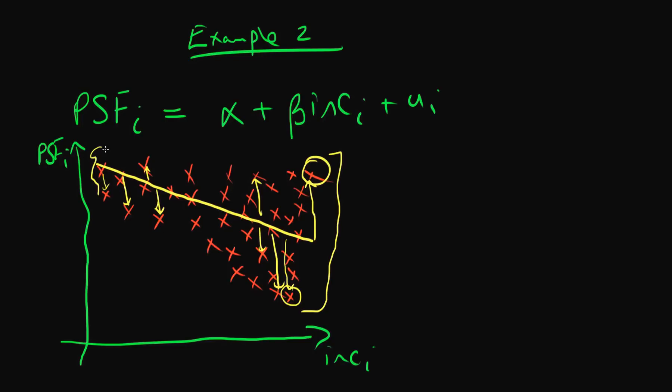So we can expect that the error or the distance which points in general are from our line increases as the level of income increases. Well, how do we write this mathematically? Well, we might say that the variance of our errors given an individual's level of income is some sort of increasing function of,